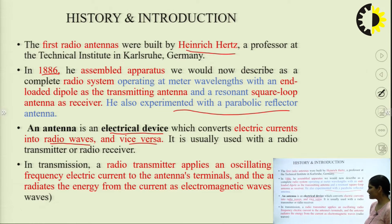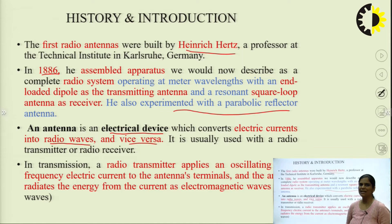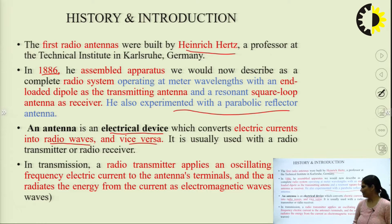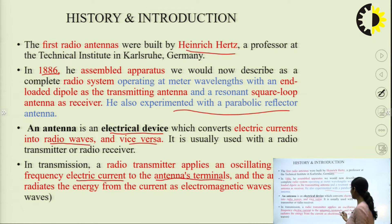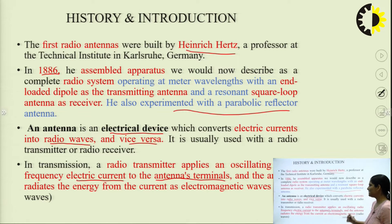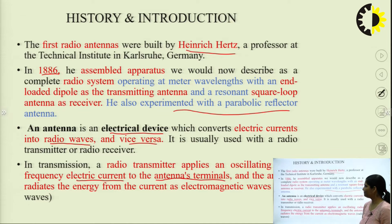In transmission, a radio transmitter applies an oscillating radio frequency electric current to the antenna's terminals, and the antenna radiates energy from the current as electromagnetic waves.